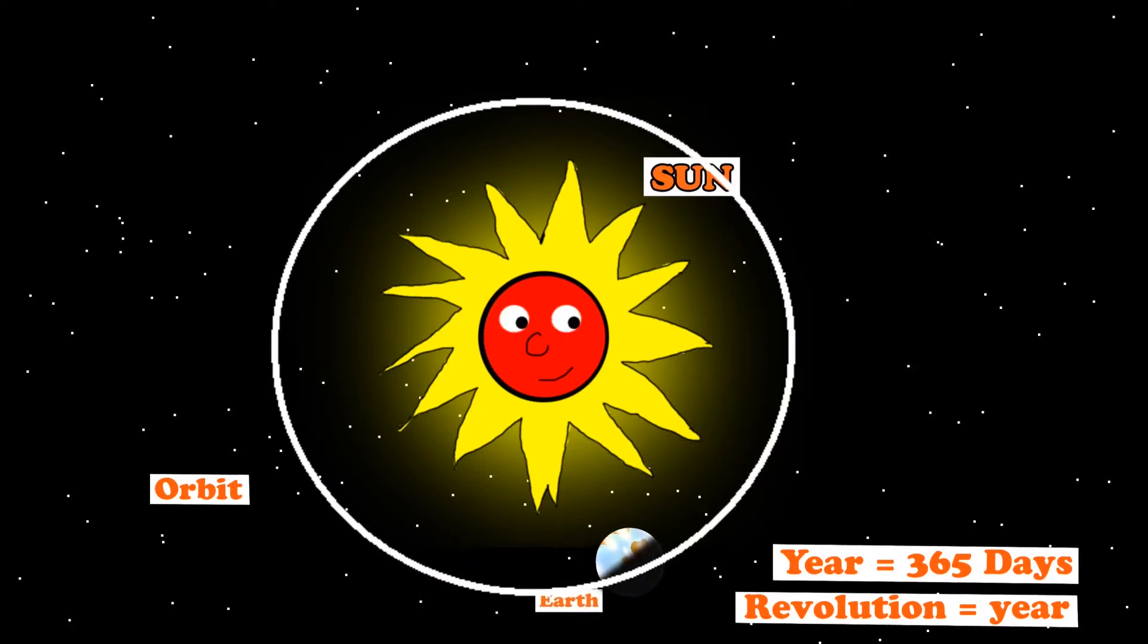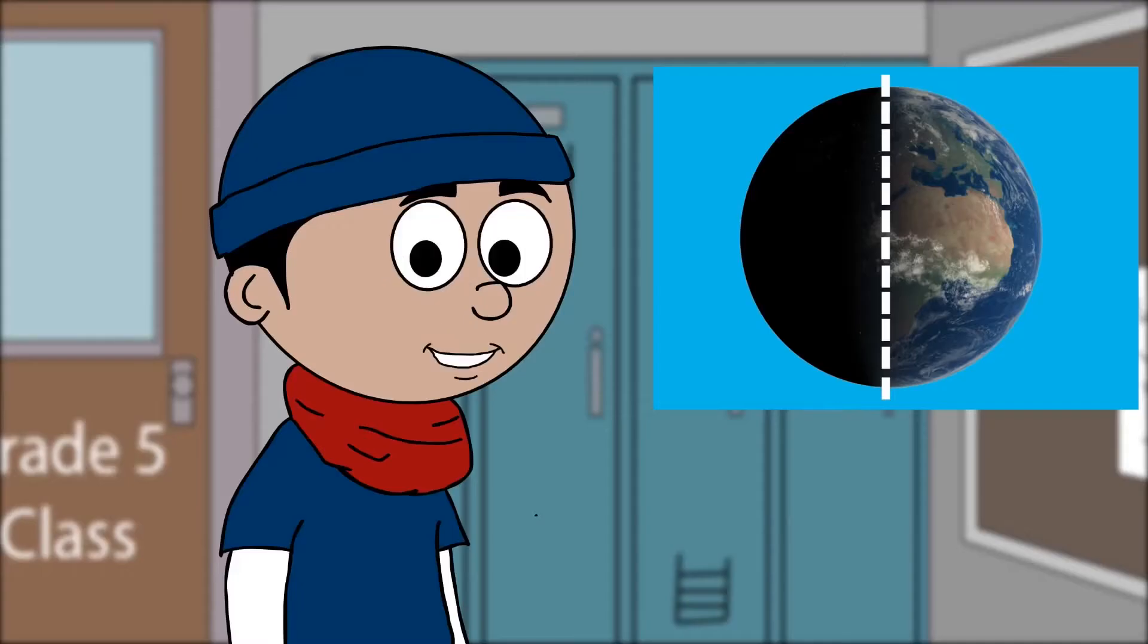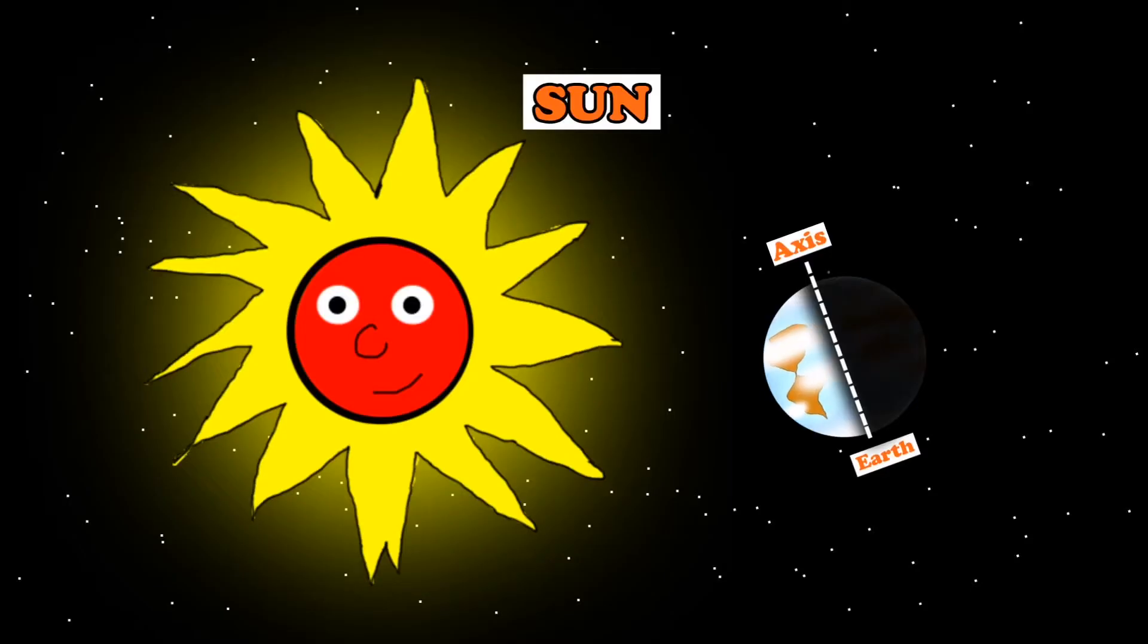The Earth keeps rotating and spinning. It's not sitting straight up and down, its axis is actually tilted just a little. This tilt causes one part of the Earth to be closer to the sun while the other part to be leaning away.